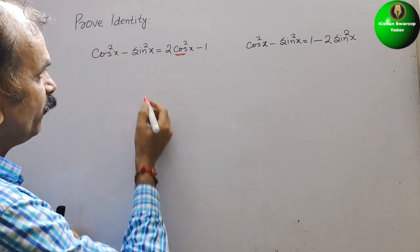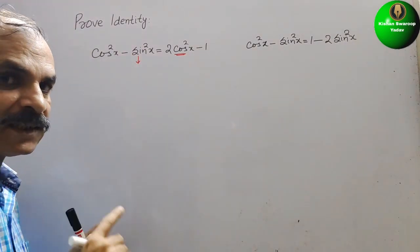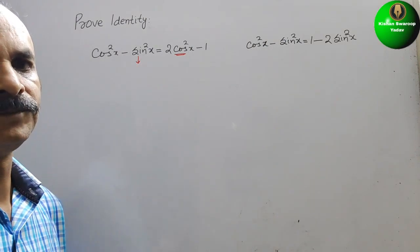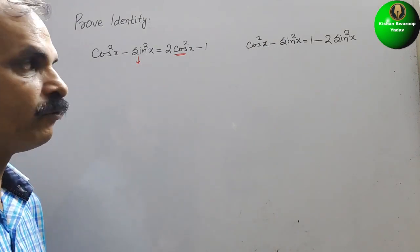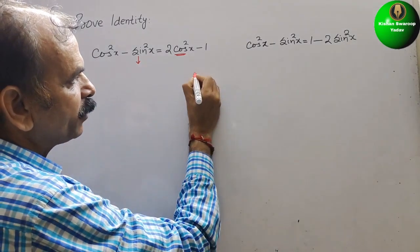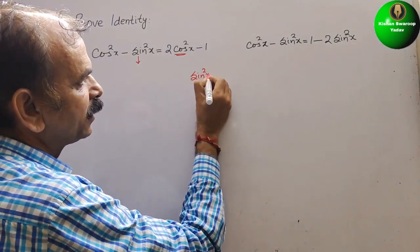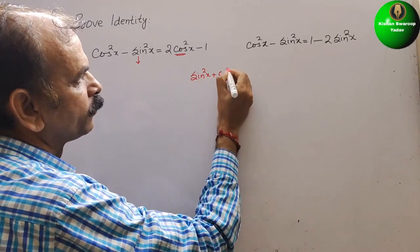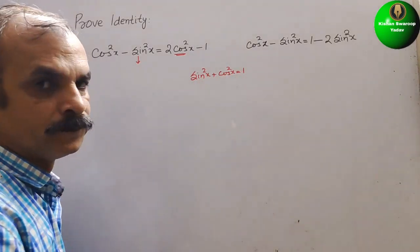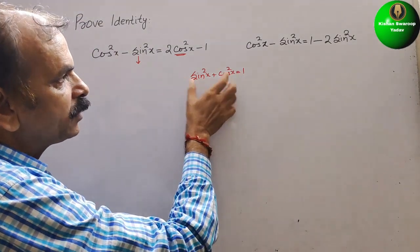So here we will convert sin²x into cos²x. One identity we can use is sin²x + cos²x = 1. With the help of this, we can solve both these questions.